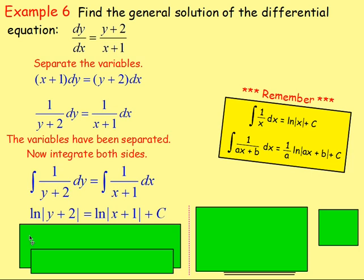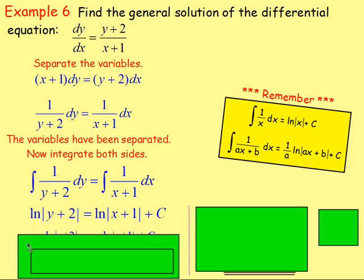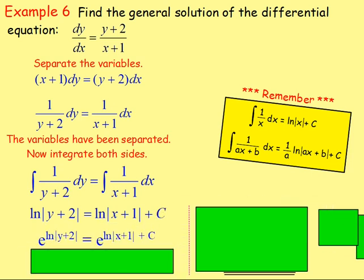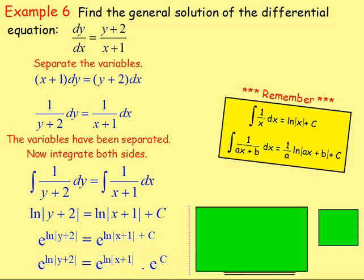From there, if you want to get into y equals, you'd have to get rid of ln. The inverse of ln is your exponential, so let's take the exponential of both sides. So e to the power of ln(y plus 2) equals e to the power of ln(x plus 1) plus c. You've got e to the power of something plus something, so you can split that up — e to the power of ln(x plus 1) times e to the power of c.